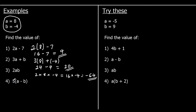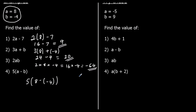And question 4: 5 times (a minus b). We're going to do the bracket first. So it's going to be 5 times (8 take away negative 4). When we take away a negative, we go up — we add. So 8 take away negative 4 is the same as 8 plus 4, which is 12. So we've got 5 times 12, and that is 60.